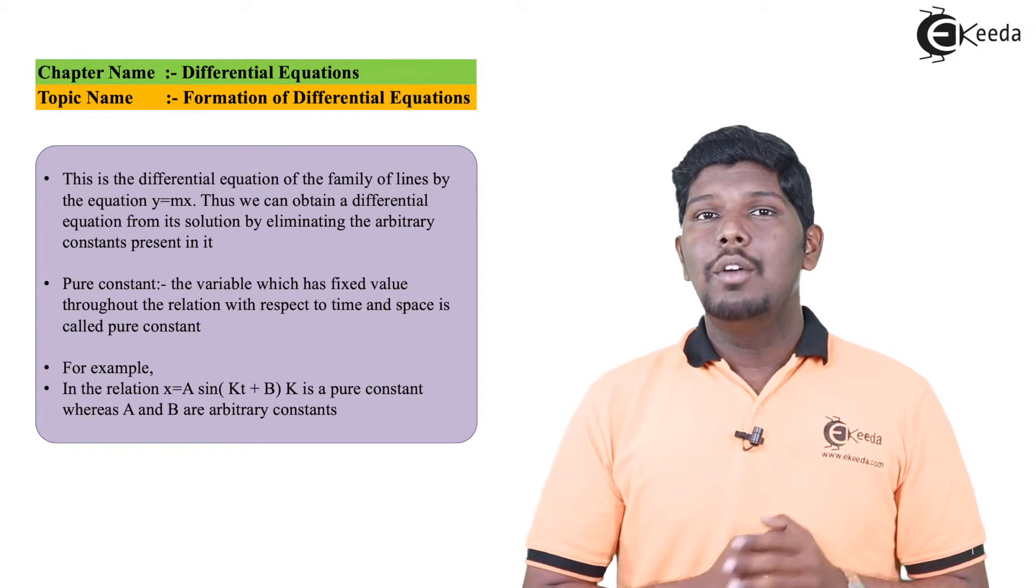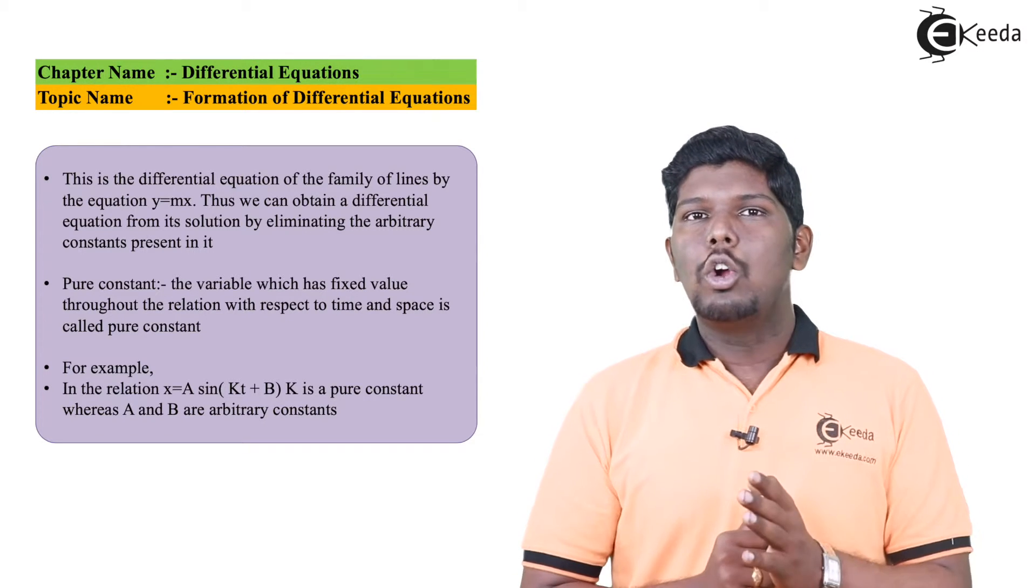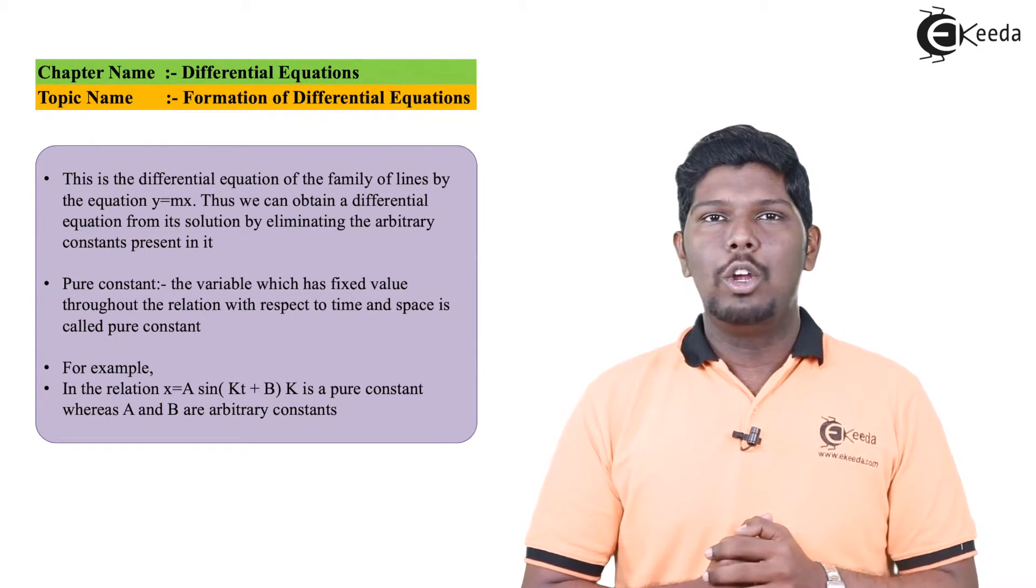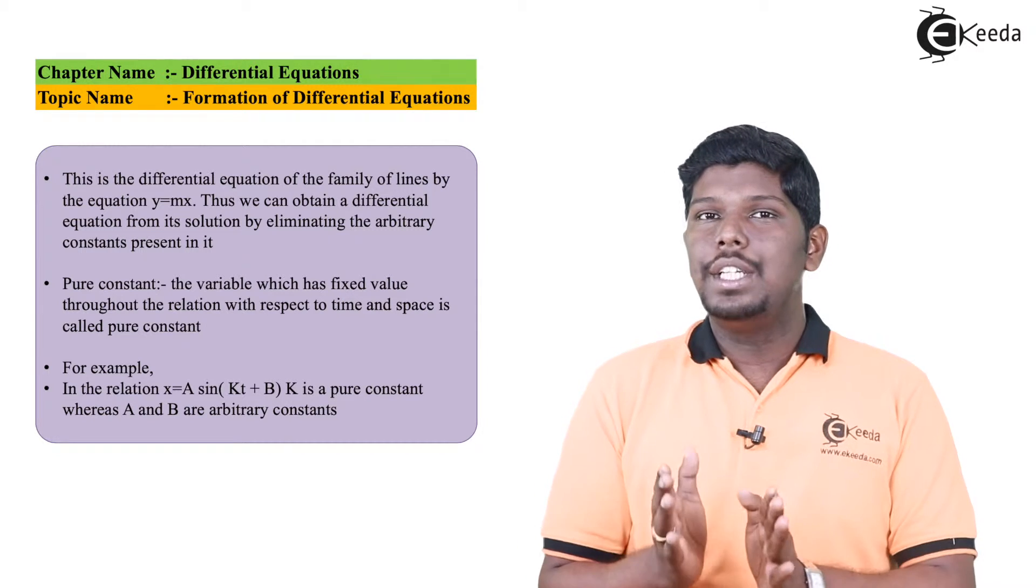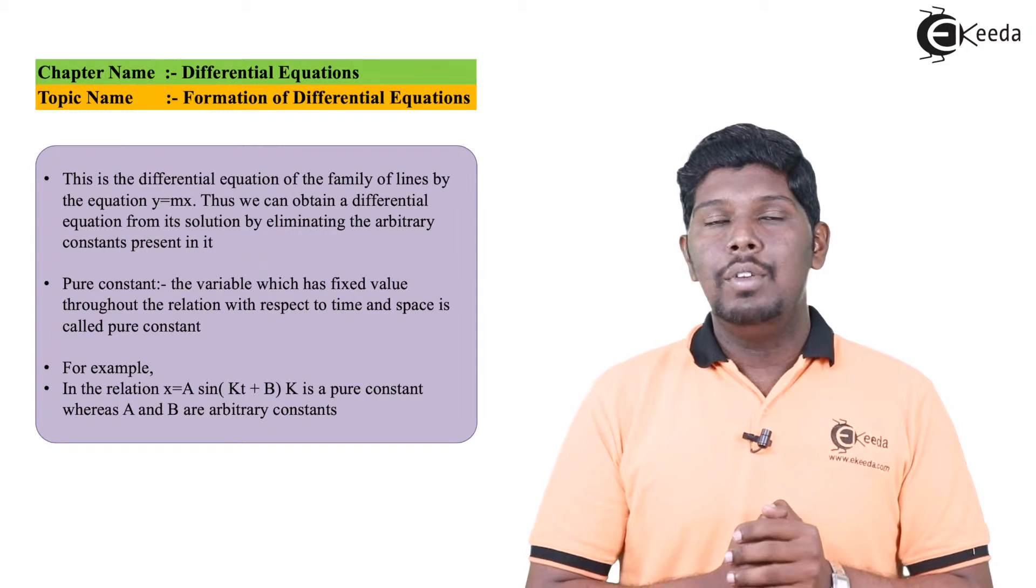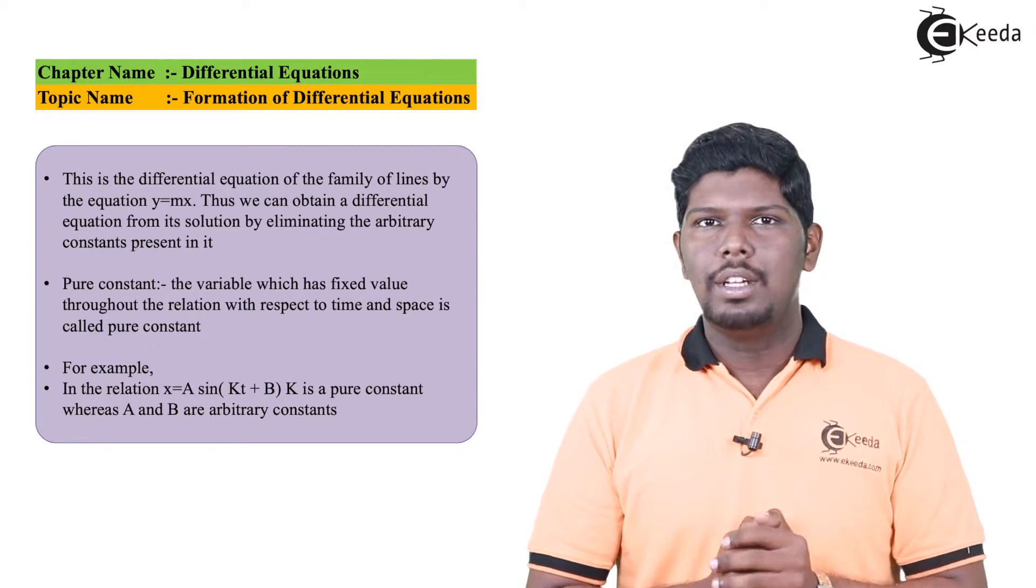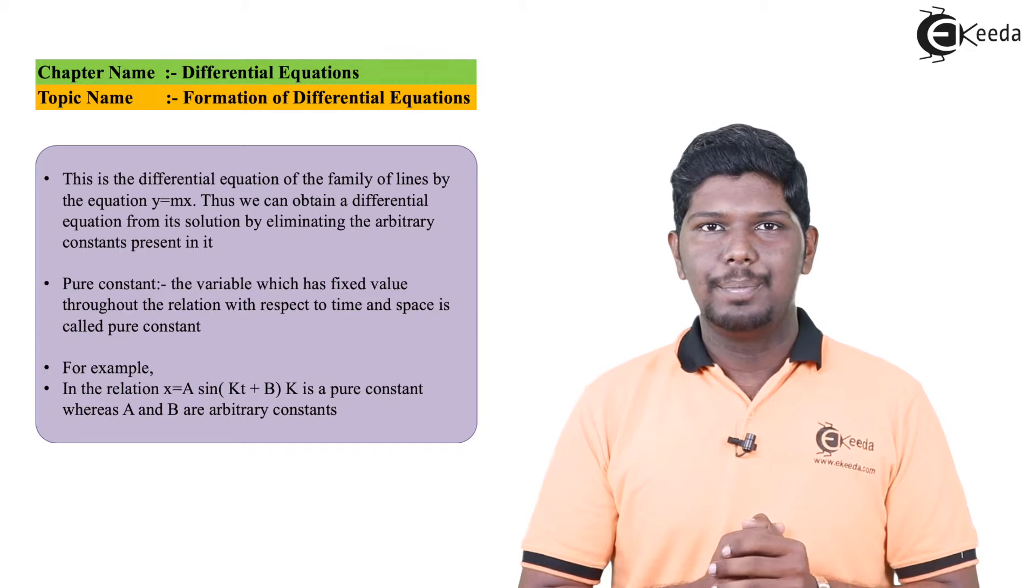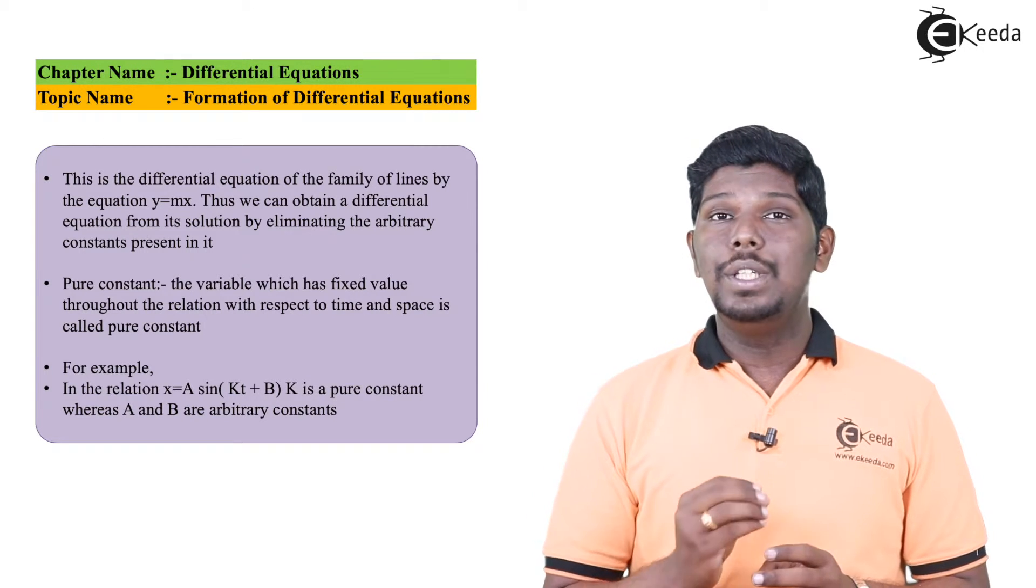Now let us see what is a pure constant. So pure constant is exactly opposite of arbitrary constant. In arbitrary constant we have said its value changes from case to case, but in constant or a pure constant we say its value is always fixed for any specified conditions.